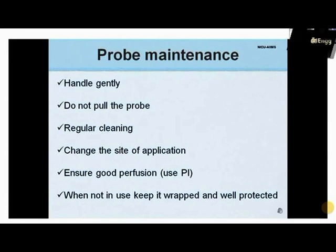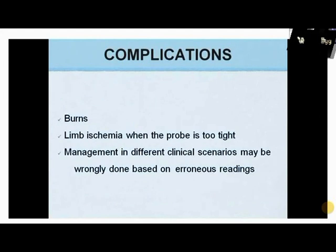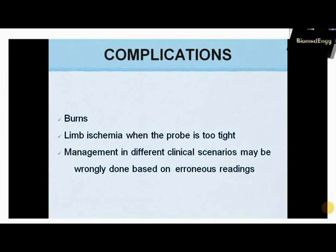When not in use, keep the probe protected from light, dust, and mechanical damage. For neonates weighing 500 grams to 3 kilograms, the probe is placed on the anterolateral aspect of the foot. For infants weighing more than 3 kilograms, it is placed on the palm, thumb, great toe, or index finger. Complications such as burns from electrical short-circuiting or limb ischemia if the probe is applied too tight — particularly in an edematous limb — can occur despite pulse oximetry being non-invasive.